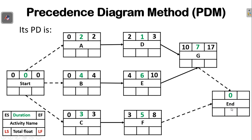The early start time of the end activity is the maximum value between the early finish times of activities F and G, which is 17. The early finish time of the end activity is 17 plus zero (duration), giving 17. We are now done with the forward pass, having computed all early start and early finish times.